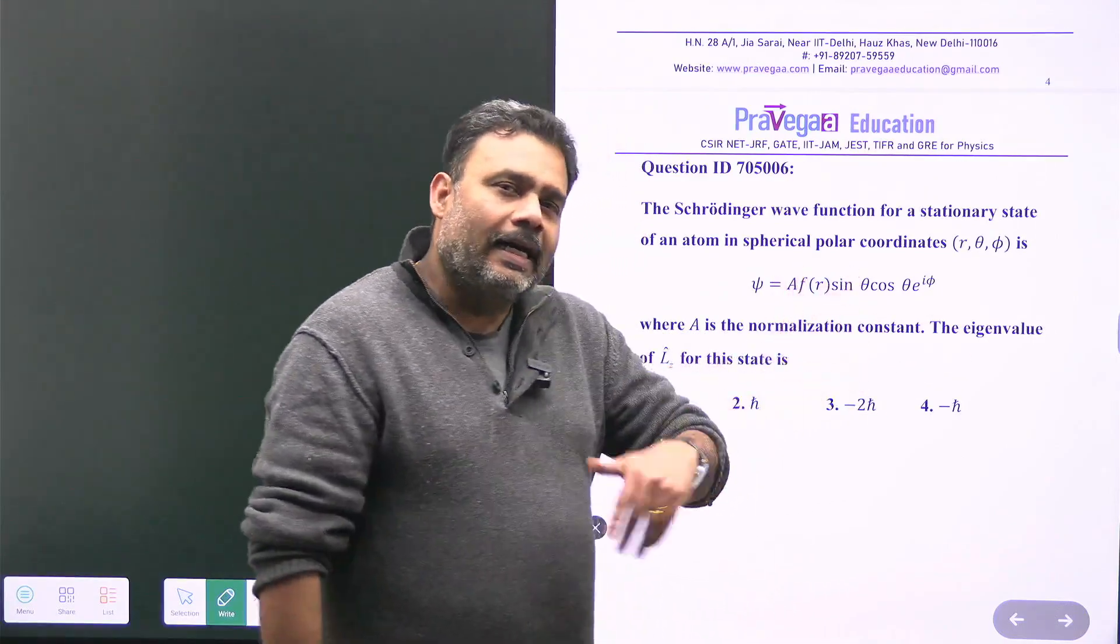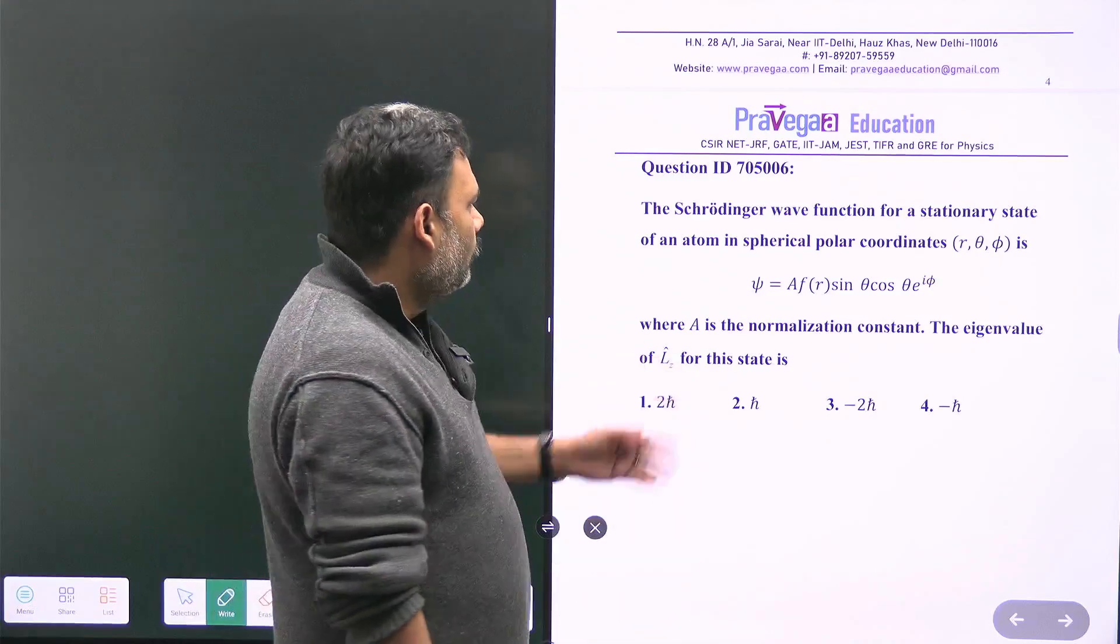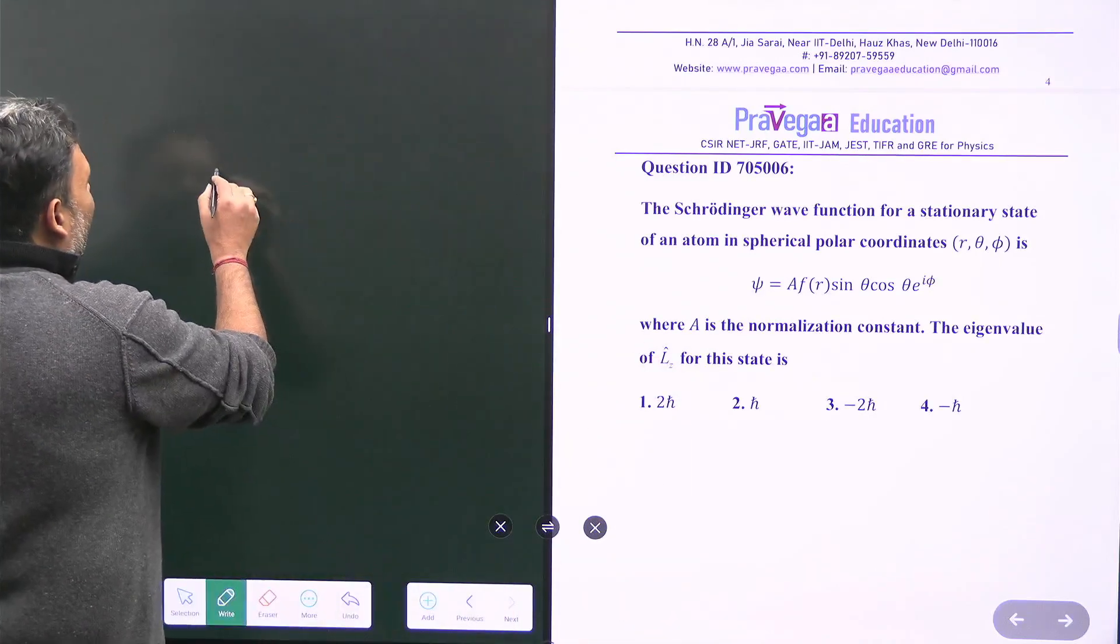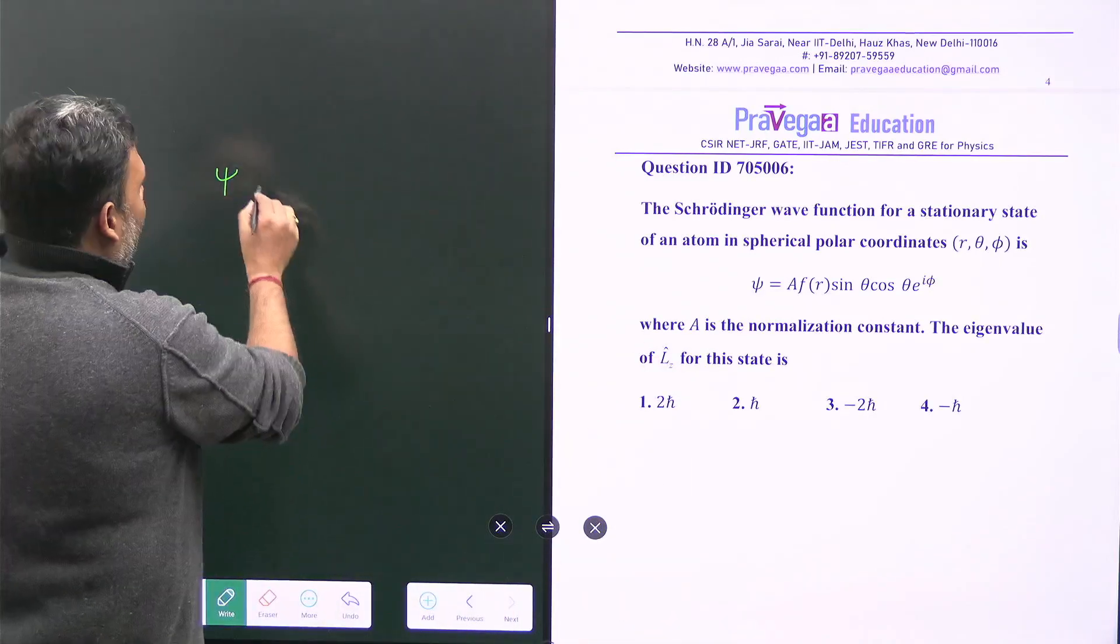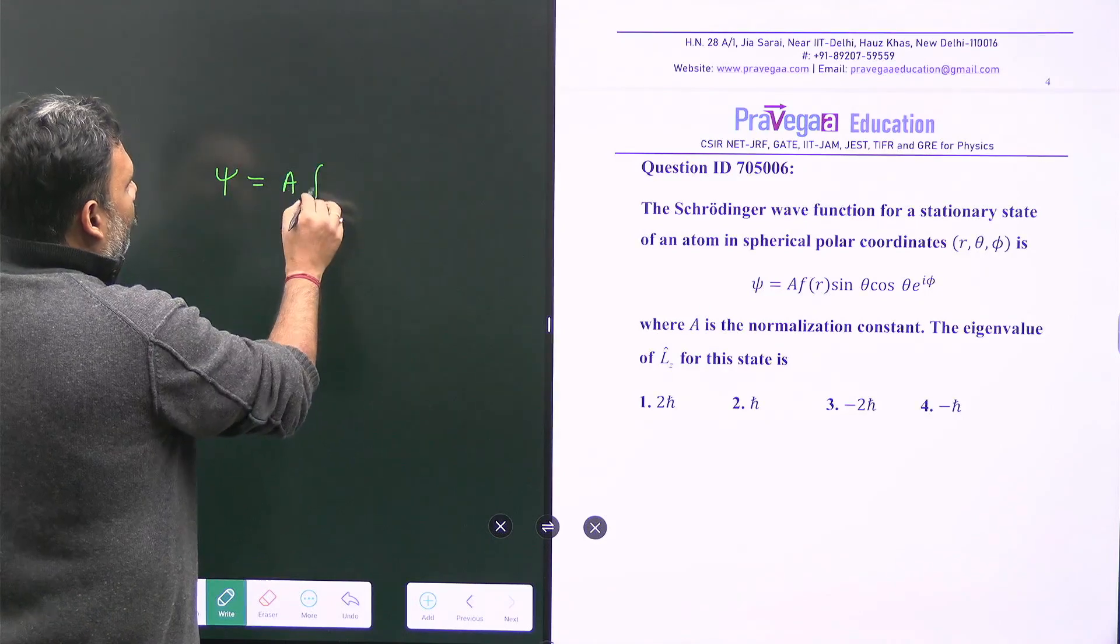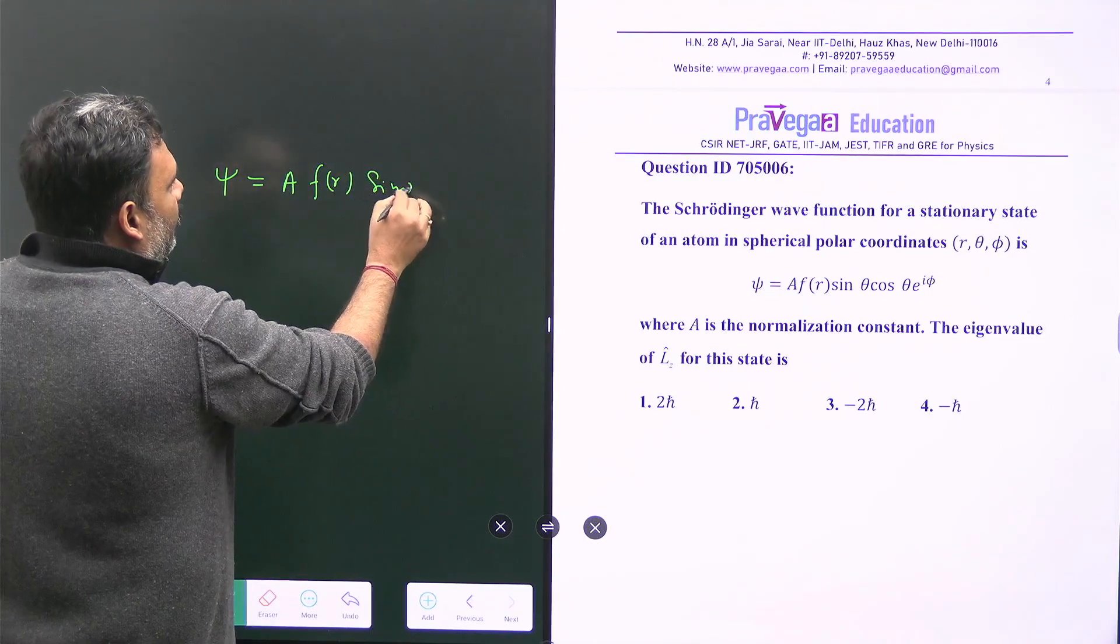This wave function is an eigenstate of Lz. So the wave function is simply ψ = a f(r) sin θ cos θ e^(iφ).